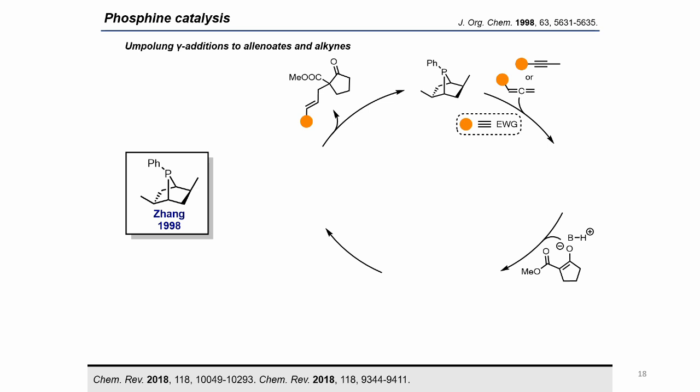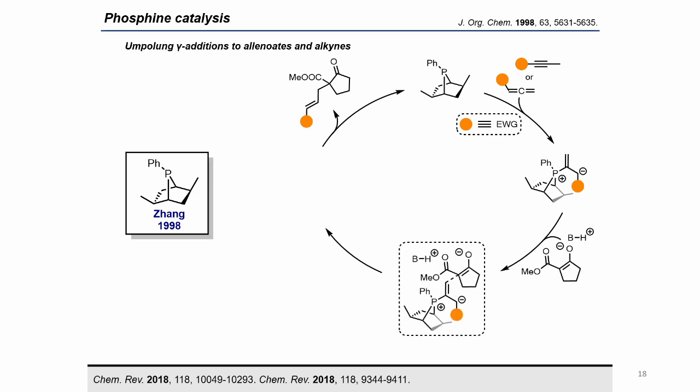A year later, the same group reported the application of these zwitterions in another enantioselective reaction. In this case, the zwitterion was formed through the addition of the phosphine catalyst to either allenes or internal alkynes. In the presence of another nucleophile, such as the cyclic enolate shown in this slide, chiral zwitterions act as electrophiles, leading to enantioenriched ketoesters bearing a tetrasubstituted stereocenter.